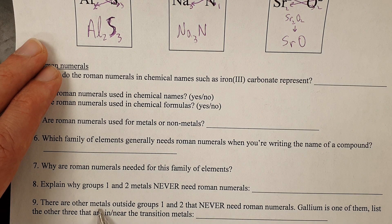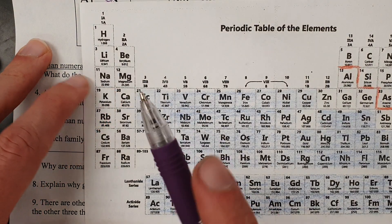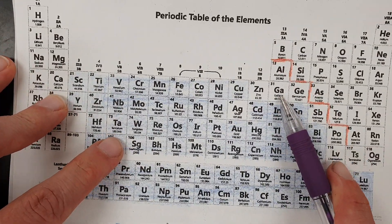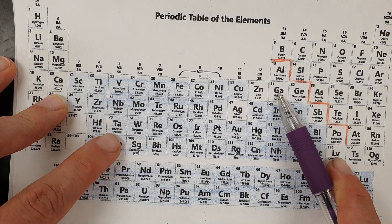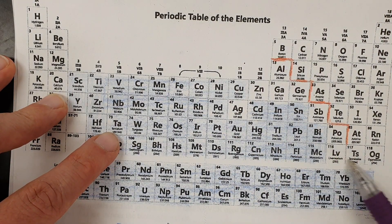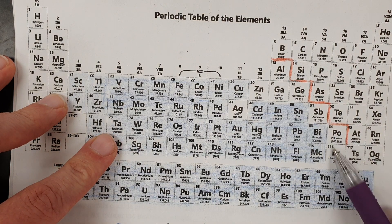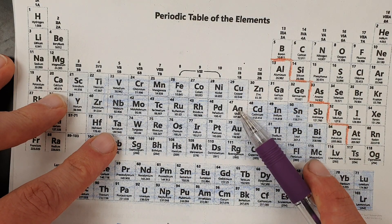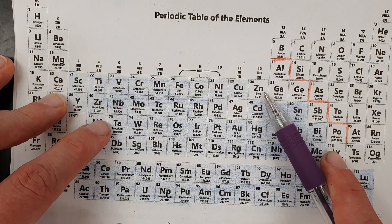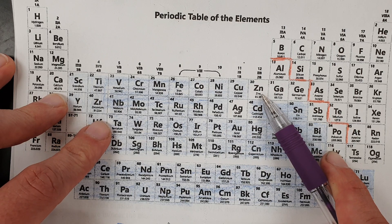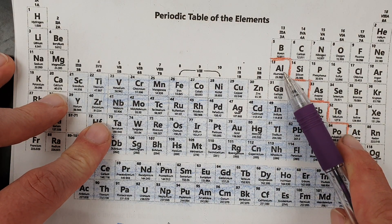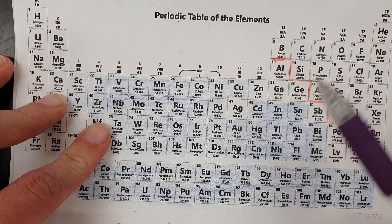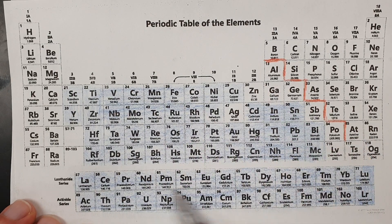There are other metals outside groups 1 and 2 that never need Roman numerals. Aside from groups 1 and 2, what else doesn't need Roman numerals? Gallium is one of them. The other three you need to know are silver, zinc, and aluminum. Silver has a charge of plus 1 always, so you don't need a Roman numeral. Zinc has a charge of plus 2 always, so no Roman numeral. Aluminum is plus 3 always, so no Roman numeral needed either.